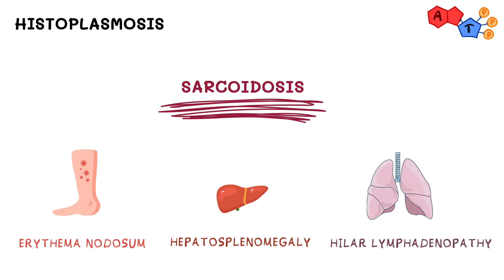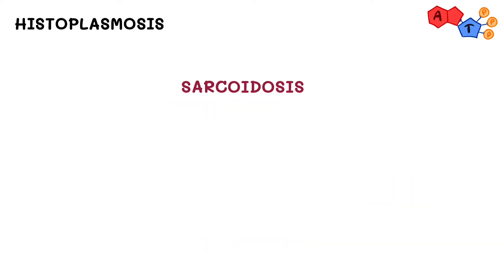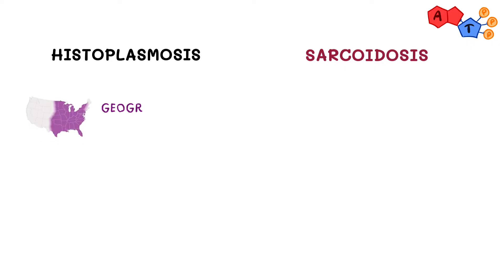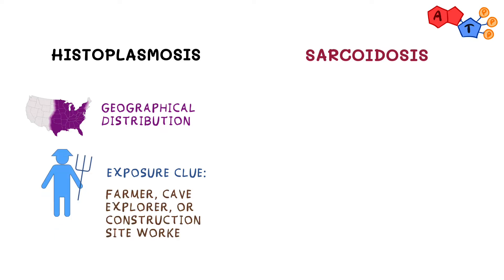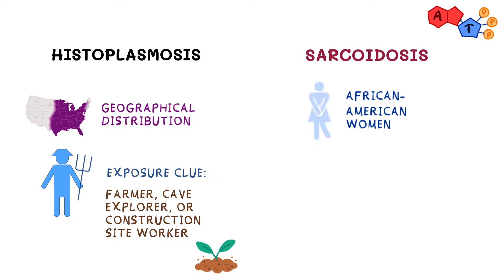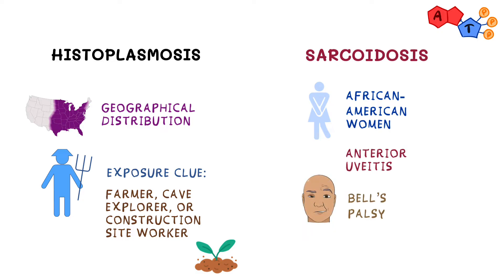To differentiate histoplasmosis from sarcoidosis: for histoplasmosis, the question will include the geographical distribution and give you a clue for an exposure — like a farmer, a cave explorer, or a construction worker where soil has been disturbed and spores are being inhaled. For sarcoidosis, they will mention an African-American woman with more unique symptoms not seen in histoplasmosis, such as anterior uveitis, Bell's palsy, or blood tests showing hypercalcemia.